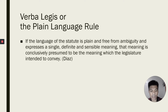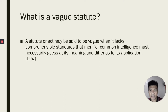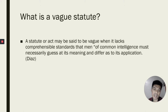But what is a vague statute, or when does a statute become vague? A statute or act may be said to be vague when it lacks comprehensible standards that men of common intelligence must necessarily guess at its meaning and differ as to its application.